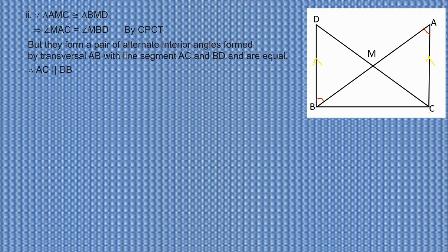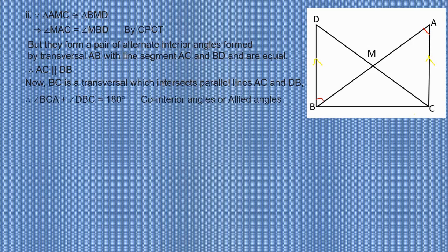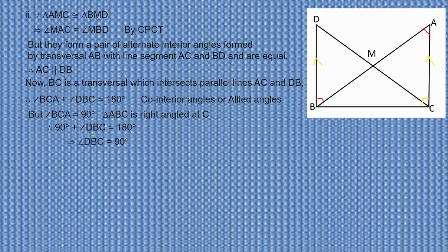Now BC is the transversal which intersects parallel lines AC and BD. Therefore, angle BCA plus angle DBC equals 180 degrees (co-interior angles). But angle BCA equals 90 degrees since triangle ABC is right-angled at C. Therefore, 90 degrees plus angle DBC equals 180 degrees, which implies angle DBC equals 90 degrees.